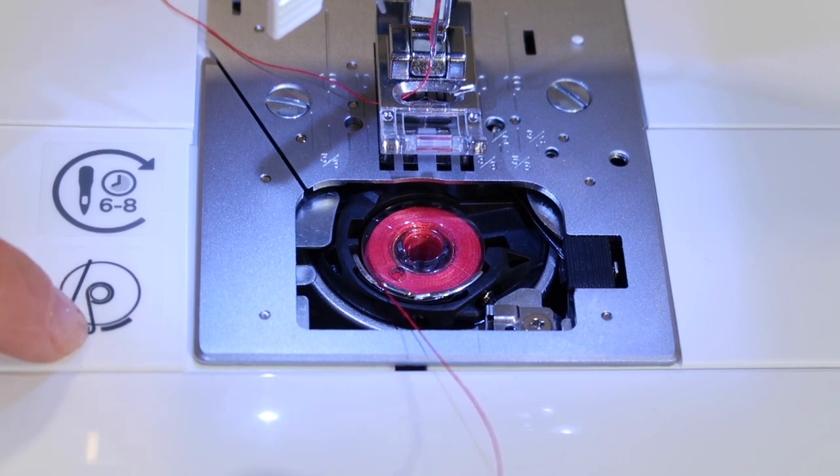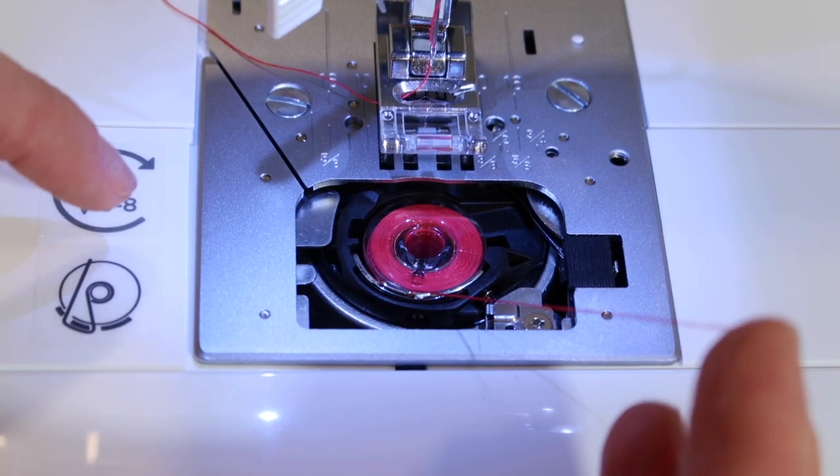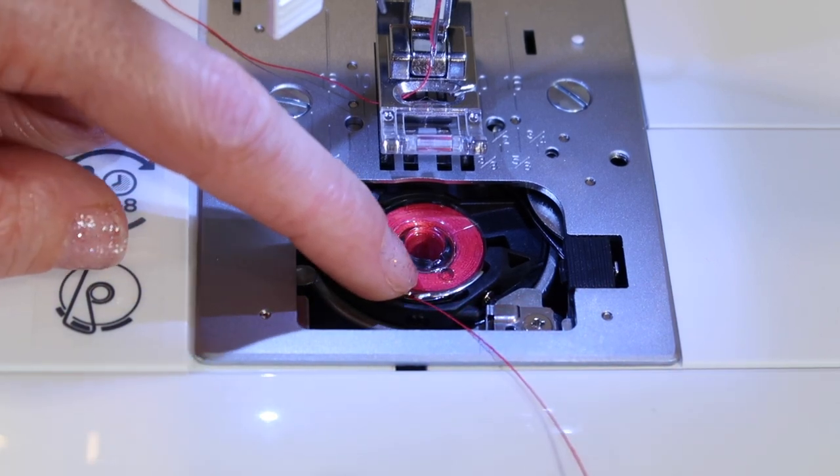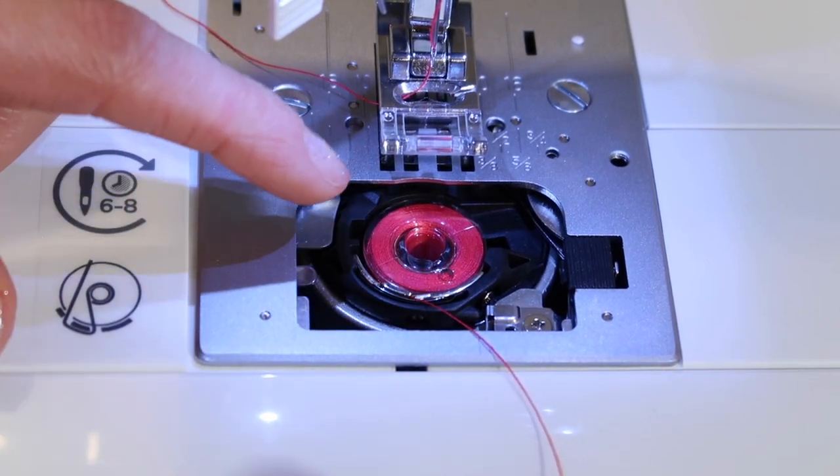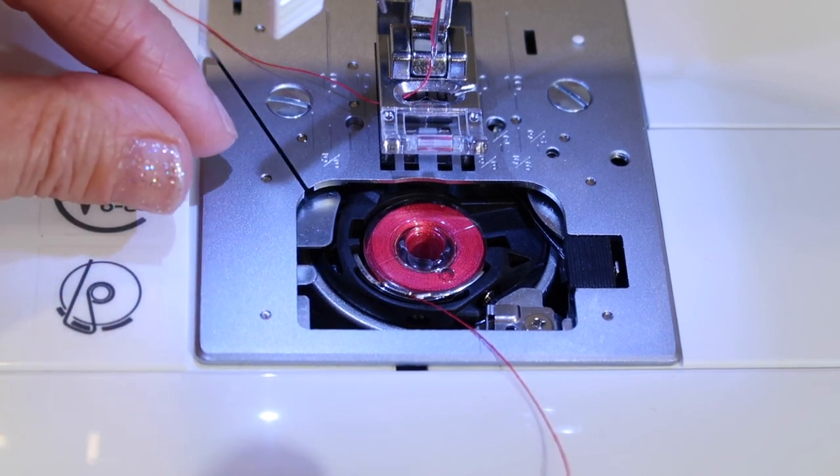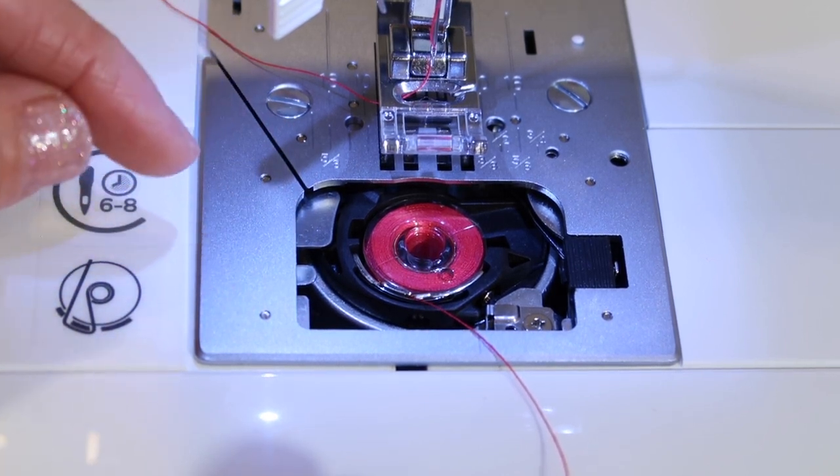Next, it shows that it needs to come down into a groove, about six o'clock, so that is very important. If you miss that, you will not have any tension on your bobbin thread, and the balance of your stitch will not look as it should.